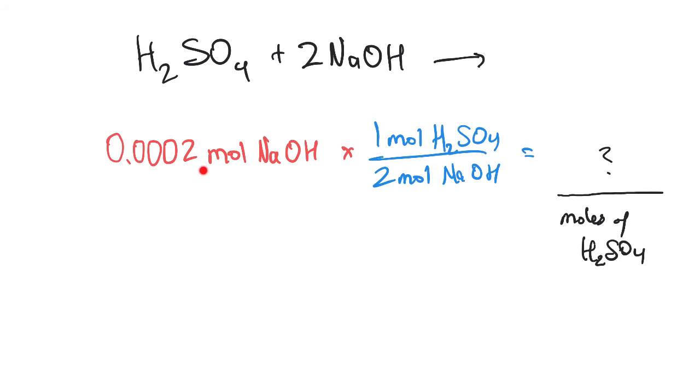If I know that I have this amount of sodium hydroxide, as many moles of sodium hydroxide, I can use this ratio, put that at the bottom, put the acid on the top. So I'm going to take this times one, divide by two, or times one-half, and that will give you the number of moles of H2SO4.